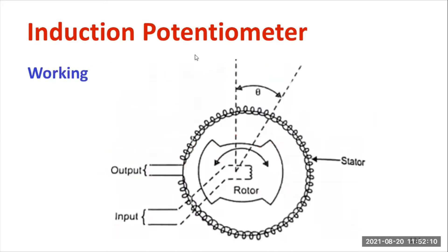Let us discuss the construction details of the induction potentiometer. We have a rotor with a suitable winding — you can see the rotor part. It has a special type of structure with a rotor winding connected over there. You can also see the stator with a suitable winding. The stator winding is shown here, and the rotor is connected to the shaft — directly connected to a mechanical body where we need to measure the angular displacement.